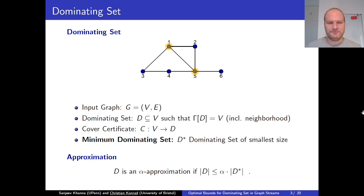We're interested in a minimum dominating set — that's the dominating set of smallest size; here this one would be of size two. We are also interested in approximations. We say that a dominating set is an alpha-approximation if its size is at most alpha times the size of a minimum dominating set, so approximation factors are at least one. Dominating set is the problem we address in the data streaming setting, and it is related to the set cover problem, which has been extensively studied in the streaming setting.